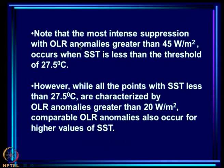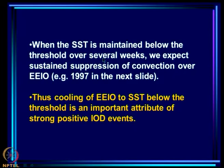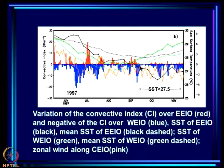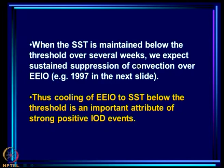When the SST is below the 27.5°C threshold for several weeks, we expect sustained suppression of convection over EEIO. In the case of 1997, the SST of EEIO decreases rather rapidly and crosses the threshold, after which there are hardly any days with convective activity. Cooling of EEIO to SST below the threshold appears to be a very important attribute of strong positive IOD events.